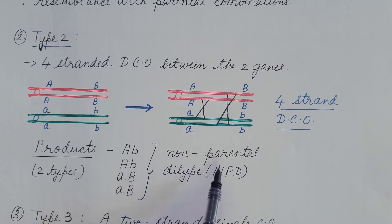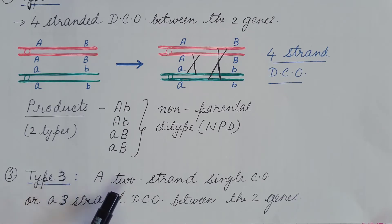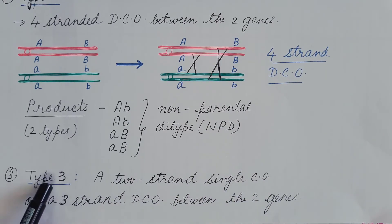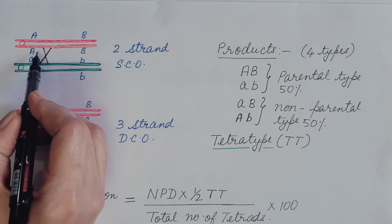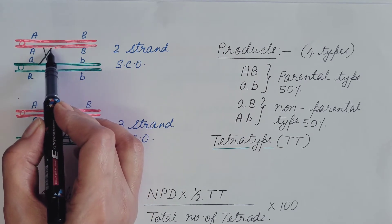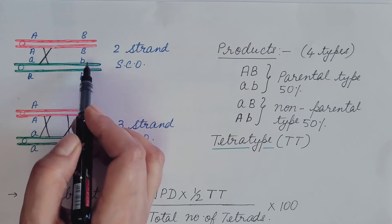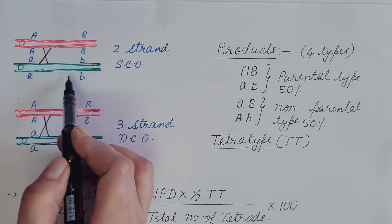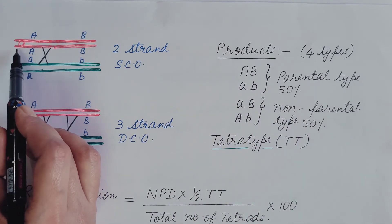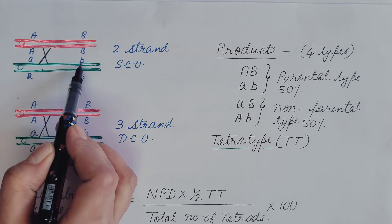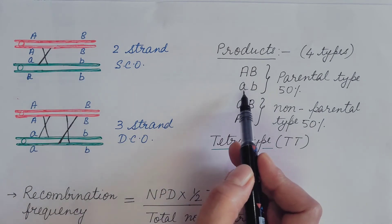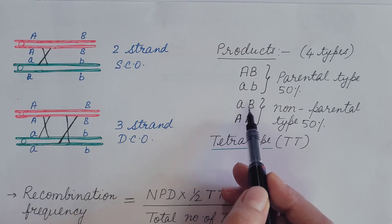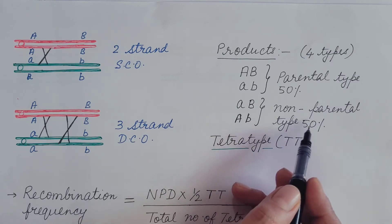Type 3: when a two-strand single crossover or three-strand double crossover occurs between the two genes, it results in the third type of tetrad. For a single crossover, the products are two having the parental combination — capital AB and small ab — and two having non-parental combinations: capital A small b and small a capital B. This type of tetrad is known as Tetratype, or TT.